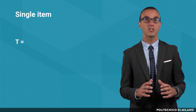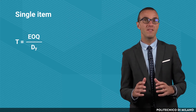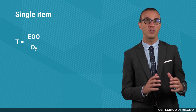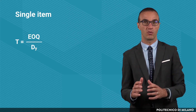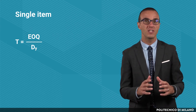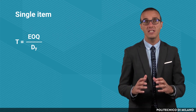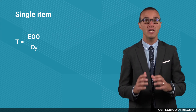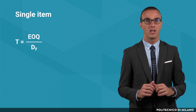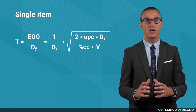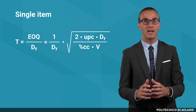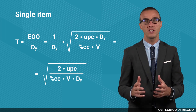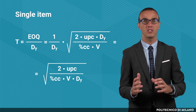Starting from the single item case, the order time interval is calculated based on the EOQ, which, even if not corresponding to the quantity that will be ordered, is taken as a reference since it is the quantity associated to the minimum yearly total cost. This value has to be divided by the yearly demand, thus obtaining the time window between two consecutive orders.